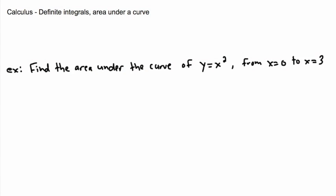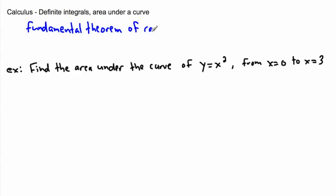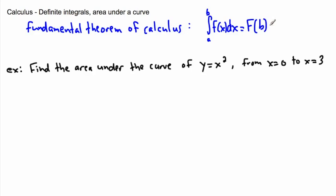Now we're ready to do some definite integrals — in other words, find the area under a curve. The key thing we're going to use is the fundamental theorem of calculus. So the fundamental theorem of calculus states that if we take the integral from a to b — those are your lower bound and upper bound — of some function f of x dx, it's going to be just the antiderivative capital F evaluated at b, minus the antiderivative evaluated at a.